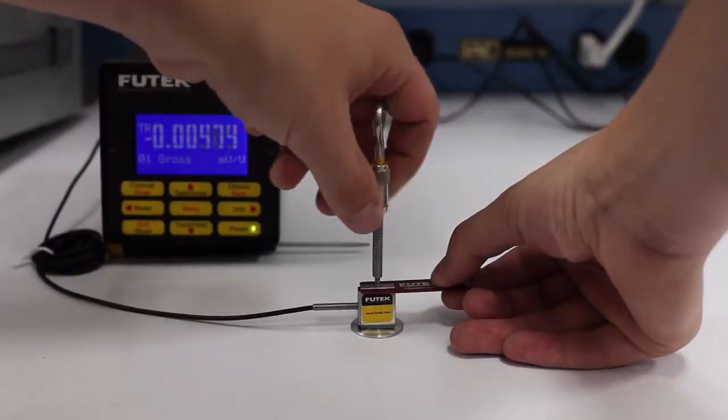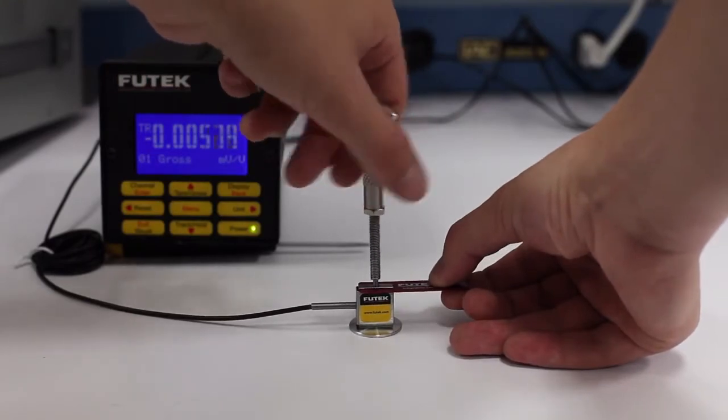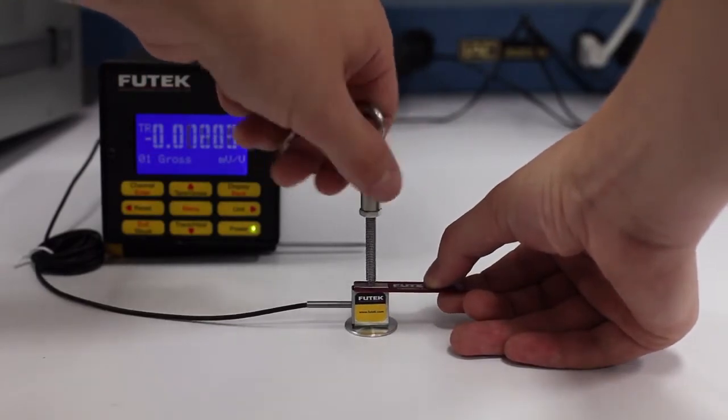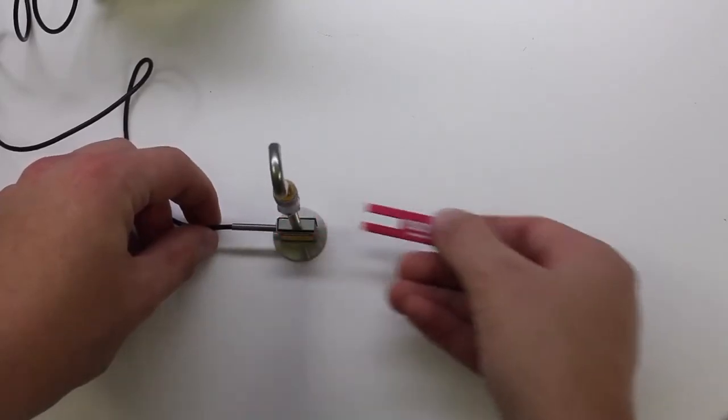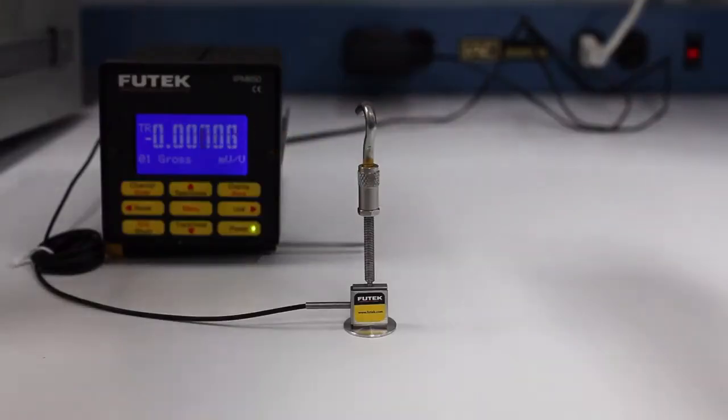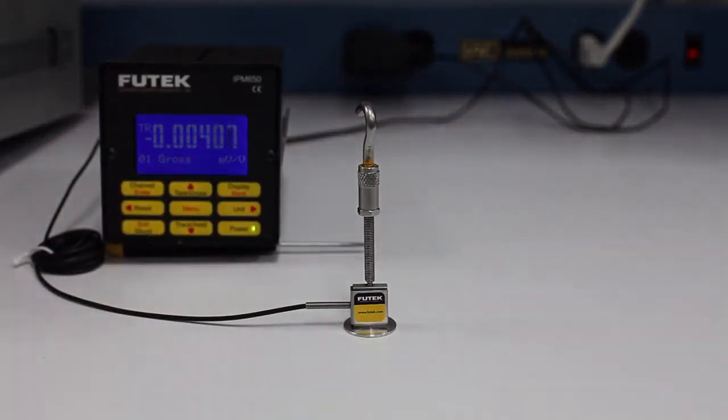Next, screw in the attachment while keeping the tool and sensor still. Try not to press down on the sensor too hard while screwing in the attachment. Also avoid screwing in the attachment too tightly as this can create harmful torque.